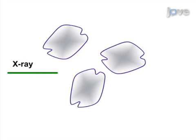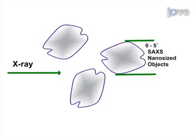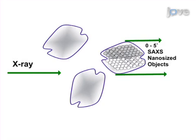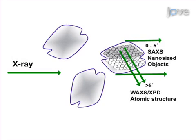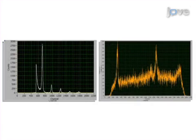Next, the x-rays will scatter off the sample, allowing the scattering distribution to be obtained. The final step is data analysis of the counts and intensity patterns obtained.